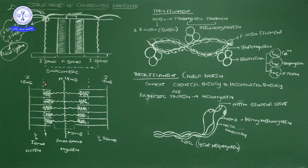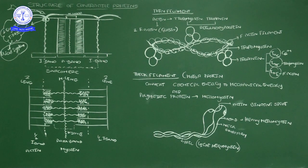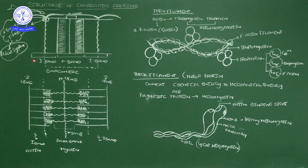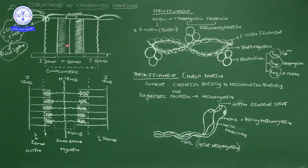Basing on which protein is present: in the I-band, actin protein is present; in the A-band, myosin protein is present. That is why we call them actin filament and myosin filament. The I-band has a light physical appearance — not much darkness — so it is the light band. The A-band is the dark band. The arrangement of light and dark bands on the myofibril gives the stripes to the muscle. That is why skeletal muscle is called striated muscle.